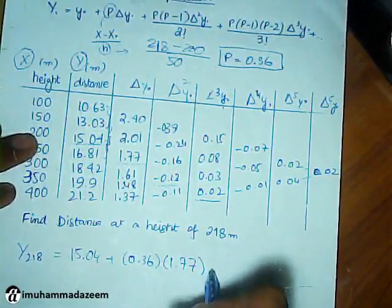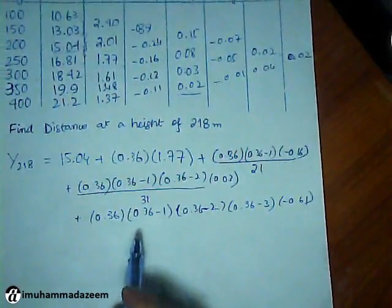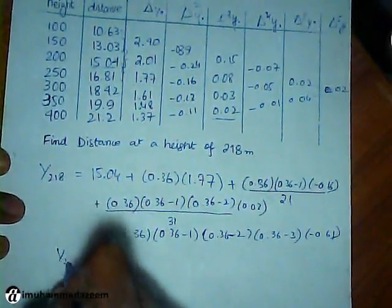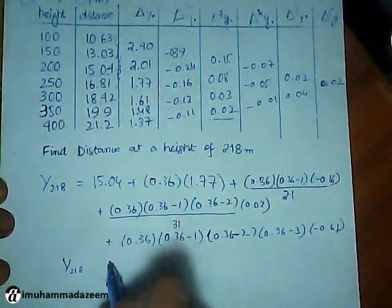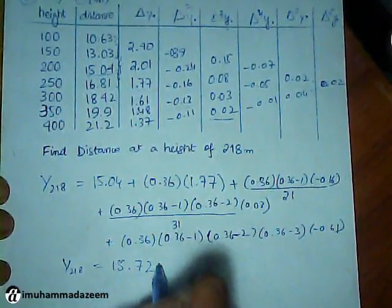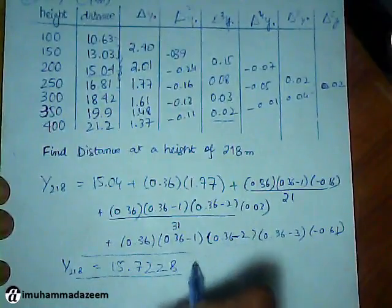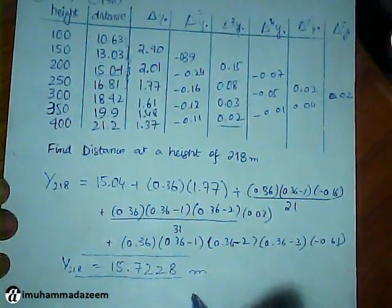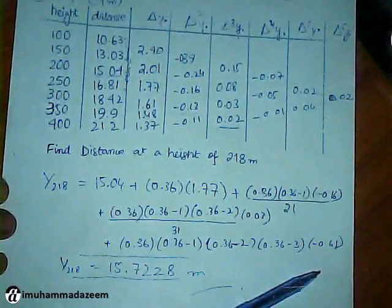In the end, it's going to give me Y218 equals 15.7228 meters. That sounds it. It's not very accurate, but we have to do this.